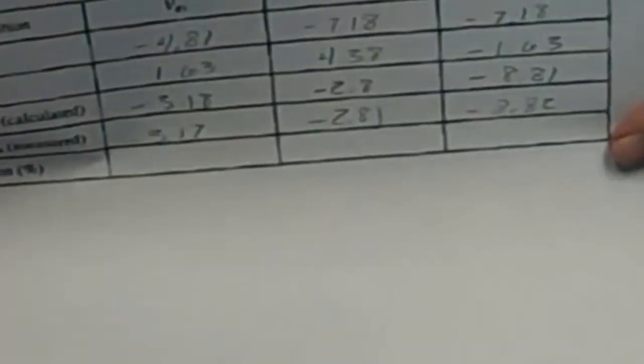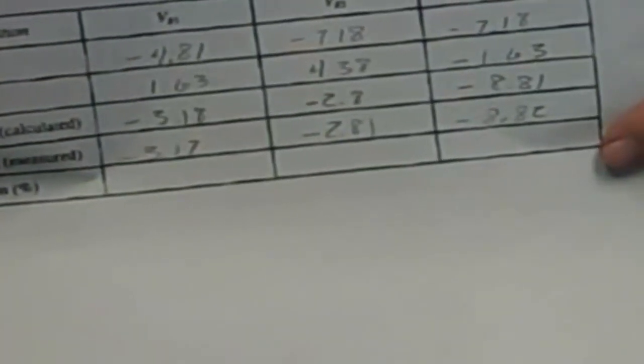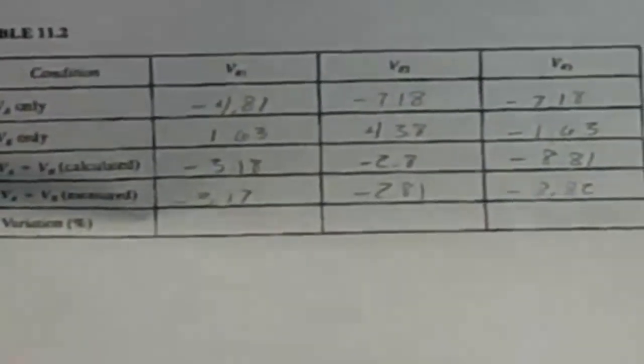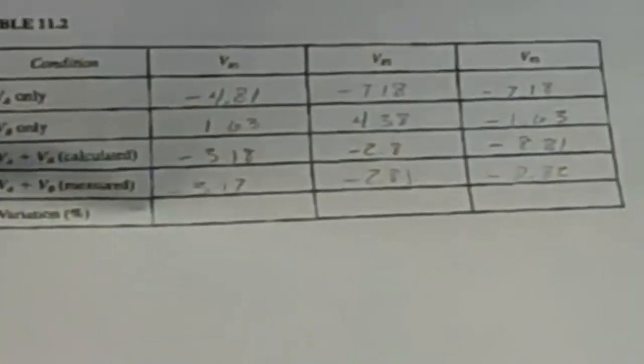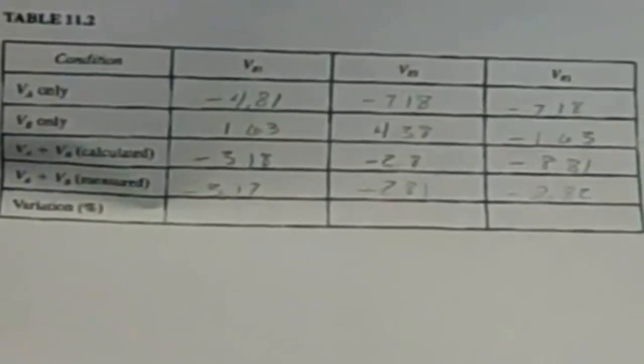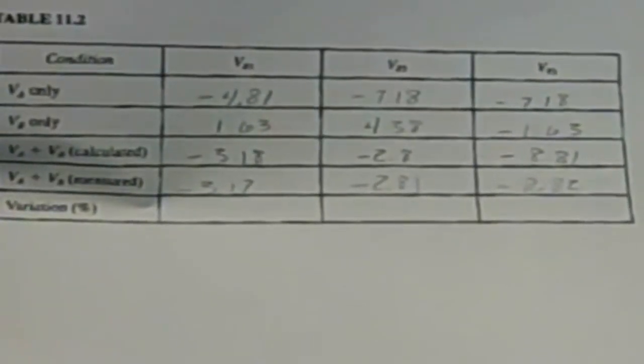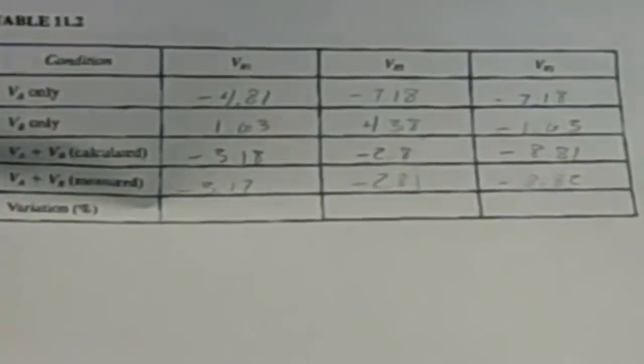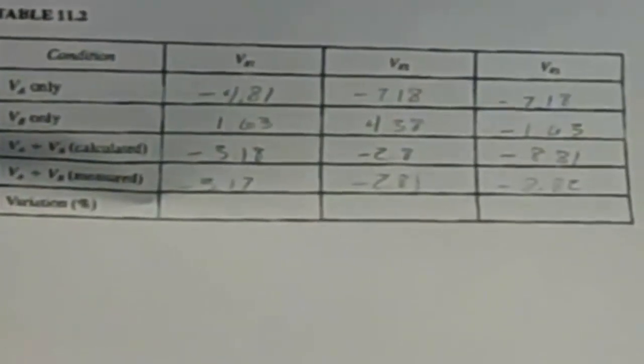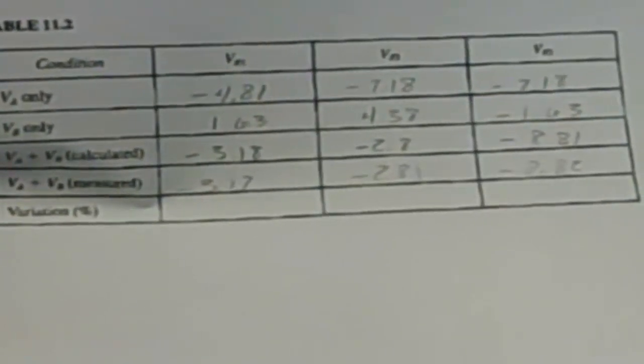And basically my conclusion is that the superposition theorem works. Notice that we can calculate the overall effect of having two voltage sources in a circuit by calculating the contribution to each separately, or in this case we measured them separately, then adding those two contributions together and we get the overall effect on the circuit.